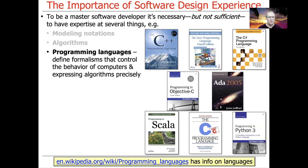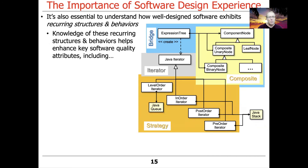We develop algorithms, we develop data structures, we apply the results of our modeling notations in the form of programming languages. So clearly having expertise in one or more — probably multiple — programming languages is crucially important to becoming a master software developer. But it's also important to have something else as part of your bag of tricks: understanding the recurring structures and behaviors that exist in well-designed software. In some sense, the knowledge of these recurring structures and behaviors is even more important than the programming languages and the modeling notations.